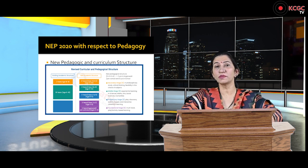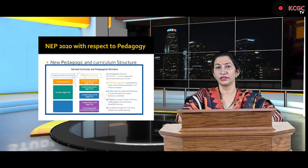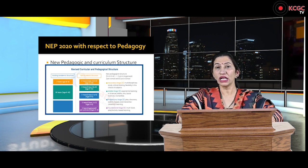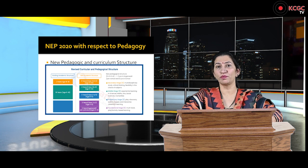Now the government has proposed the five plus three plus three plus four system. The first five years are devoted to the foundational stage, where up to class second the child will study — age group three to eight years. In this age group, the child will be taught through play-way method, activity method, discovery method, in their mother tongue, in a free environment, where no stress or pressure with regard to exams will be placed on the child. This is also called the foundational numeracy and literacy stage.